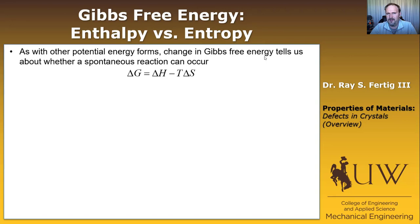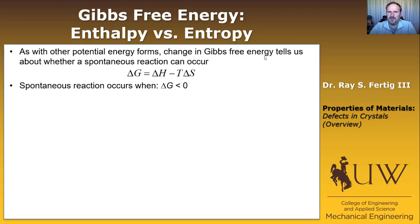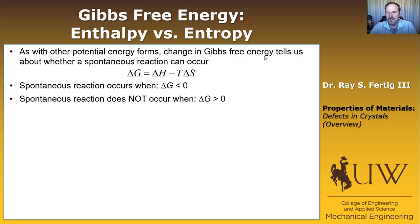For example, we talked about polymorphism: iron at higher temperature is FCC, and when cooled it wants to become BCC. When I say it 'wants to become,' I mean it will lower its Gibbs free energy by transforming to that new phase. A spontaneous reaction occurs when delta G is less than zero — it lowers the Gibbs free energy. It does not occur if delta G is greater than zero.